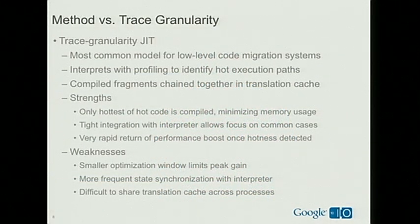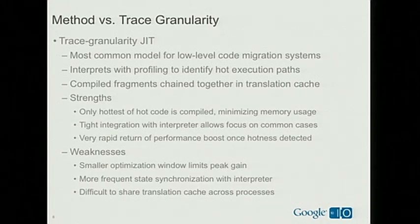The other style, the trace-based JIT, is one many people haven't heard of, but it was very popular for code migrations or virtualizations of one architecture on another, especially in the 90s. Very similar to the method-based JIT, you start off interpreting until you find hot chunks of code, but in this case the chunks are not complete methods — they're just a run of instructions that start somewhere, execute for a while, perhaps follow a branch or two, maybe identify a loop, and it pulls out just those instructions, straightens them into a straight-line trace, then optimizes that trace. It stores translated chunks in a translation cache and chains them together so execution bounces from one trace to another. Trace formation doesn't even need to respect method call boundaries.